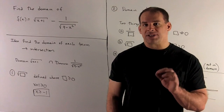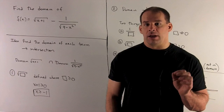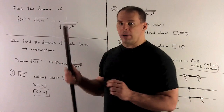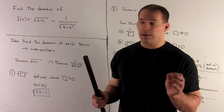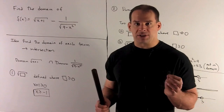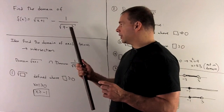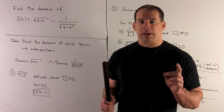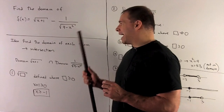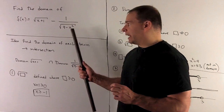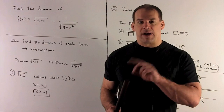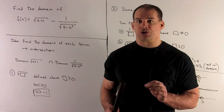If I want x in the domain of f, what has to happen is: when we put x into the first term, a number has to come out — it has to be defined. If I put x into the second term, a number has to come out too. So x is going to have to be in the domain of the first term and the domain of the second term at the same time. That means if we find each domain, we want to take the intersection.